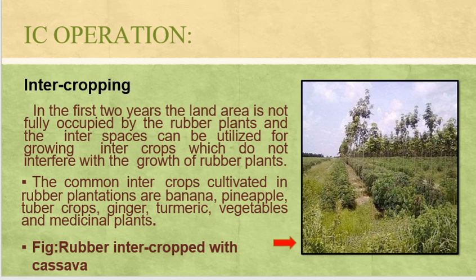In rubber trees, intercrops are also grown and cultivated in the first two years. The land area is not fully occupied by rubber plants and the interspaces can be utilized for growing intercrops which do not interfere with the growth of rubber plants. The common intercrops cultivated in rubber plantations are banana, pineapple, tuber crops, ginger, turmeric, vegetable crops, and medicinal crops. This picture shows rubber intercropped with cassava.